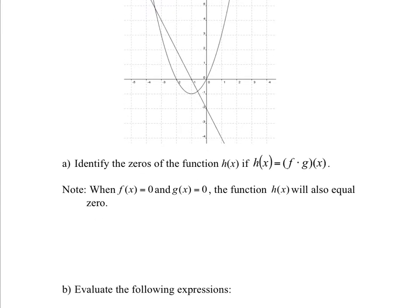So note, when f of x equals zero and g of x equals zero, the function h of x will also equal to zero. Because don't forget, you're multiplying y values. So the zeros would be x equals negative two, x equals to negative one, and x equal to zero.